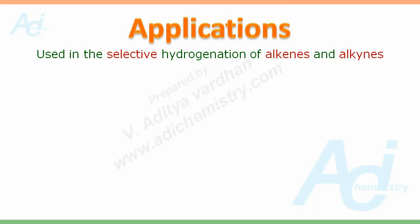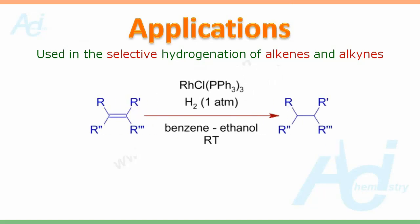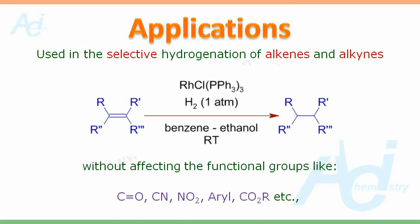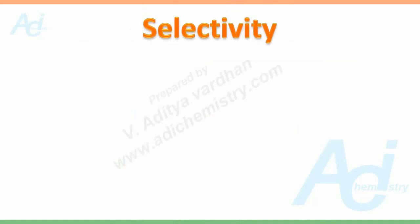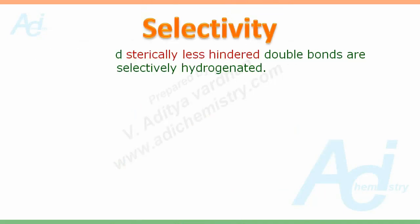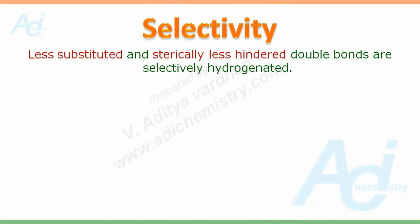It is used in the selective hydrogenation of alkenes and alkynes without affecting functional groups like C=O, C=N, NO2, aryl, CO2R, etc. Wilkinson's Catalyst is highly selective in hydrogenation reactions.